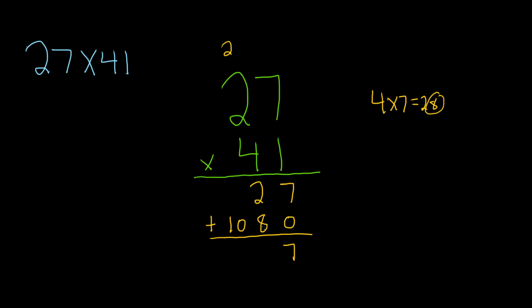2 plus 8 is 10. You can't fit the 10, so you write down the 0 and you carry the 1. 1 plus 0 is 1. Then you bring down the 1 and the answer is 1,107.